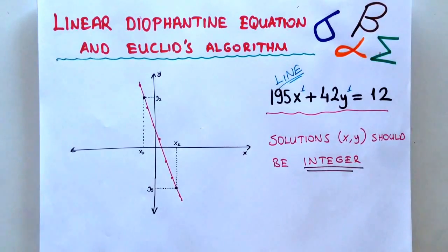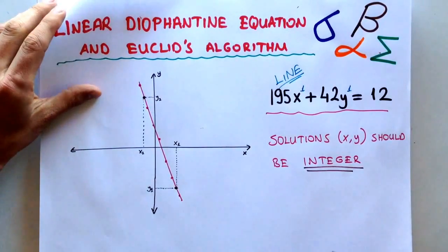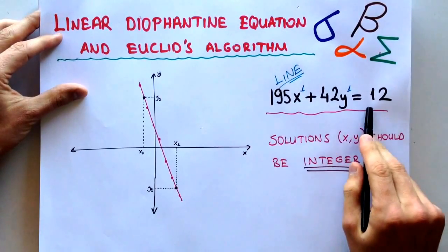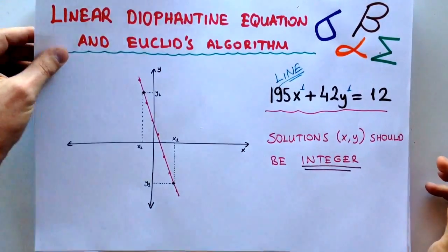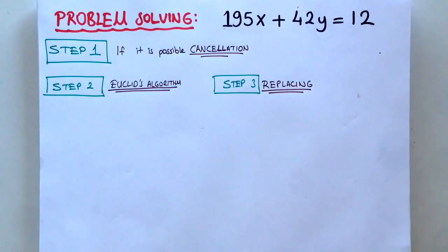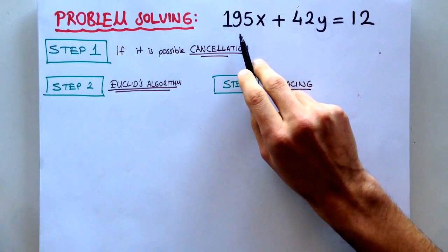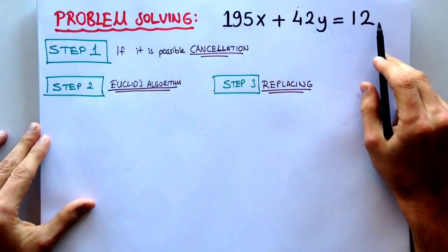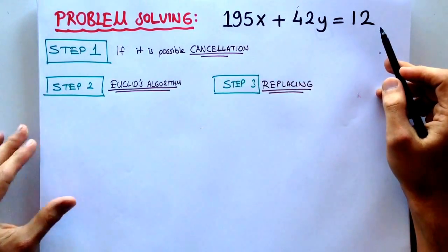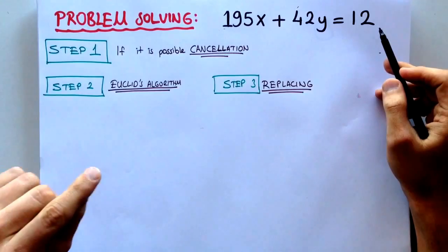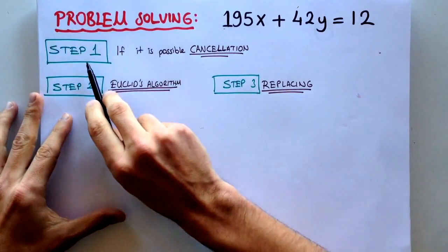This is the first step. Let's check how can we solve this. Because it's impossible to solve that - there are so many solutions, but we have to find integer ones. Our problem is the same one. When we solve this problem, we have to realize that there are so many solutions, but we will find only some solutions.